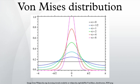Definition: the von Mises probability density function for the angle x is given by, where I_0(κ) is the modified Bessel function of order 0. The parameters μ and 1/κ are analogous to μ and σ² in the normal distribution. μ is a measure of location, and κ is a measure of concentration.